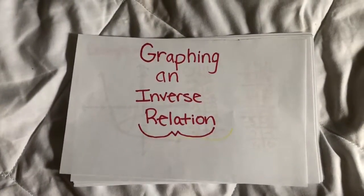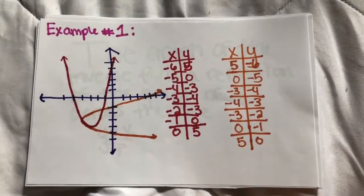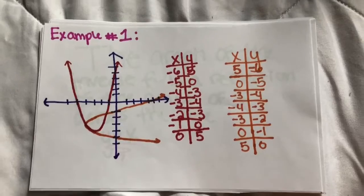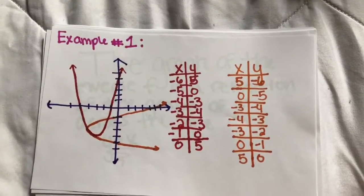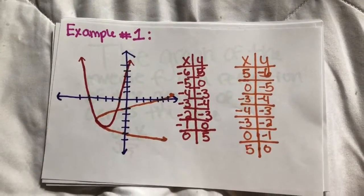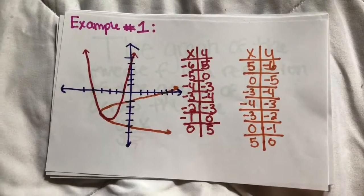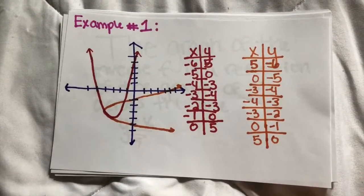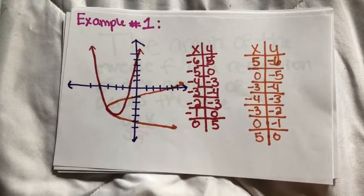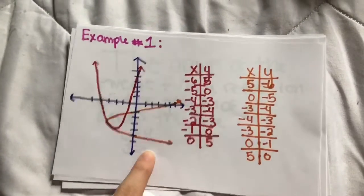Graphing an inverse relation. Example 1. Here we have a graph, in red, and a table that goes through the x and y coordinates of the graph. To find the inverse of the graph, all you do is simply switch the x and y coordinates and plot on the graph. The orange graph is the inverse of the red.